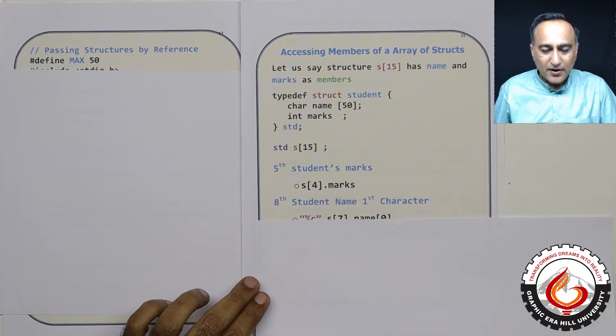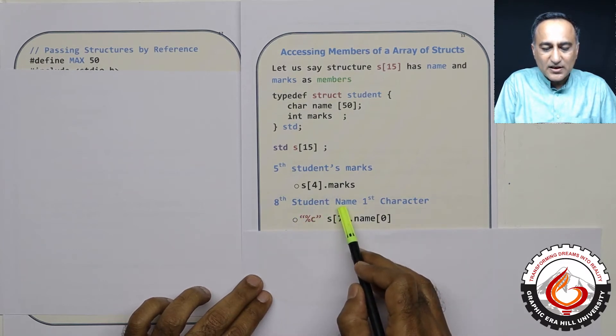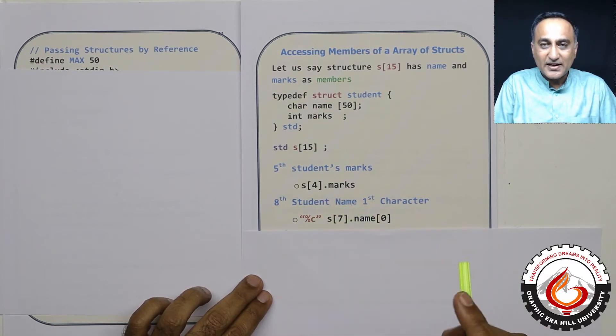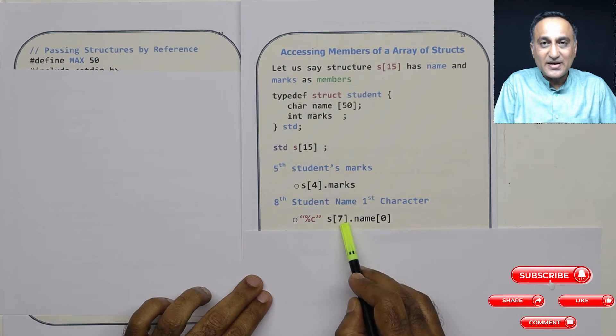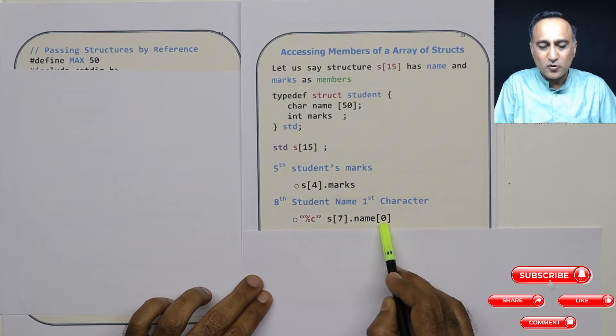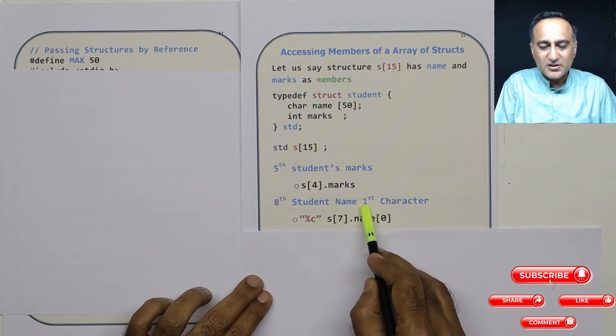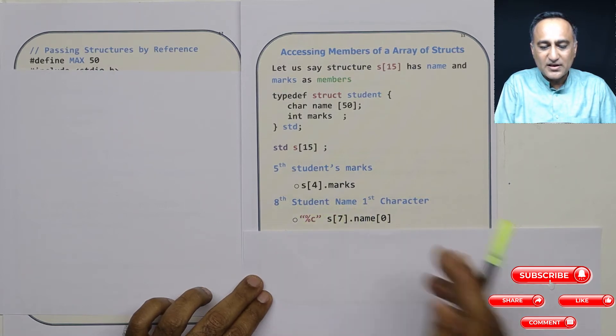Now, if I want to print the eighth student's name's first character, percentage c, s of seven indicates structure member number eight dot name of zero. This is going to print the first character of the eighth student's name.